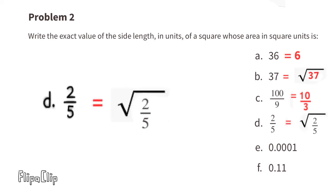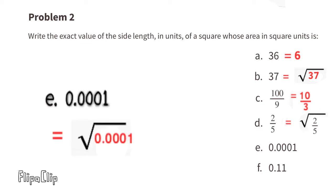Part D: if the area of the square is two-fifths square units, each side length would be the square root of two-fifths. Part E: area is 0.0001, so we need the square root of 0.0001, which is 0.01.